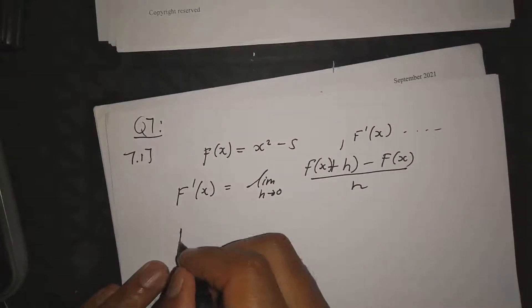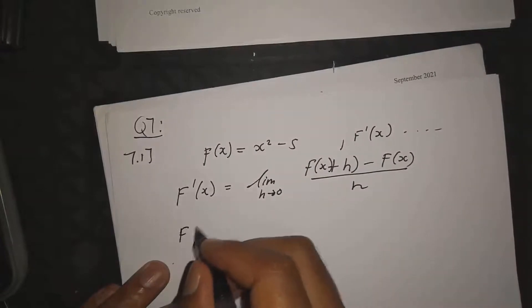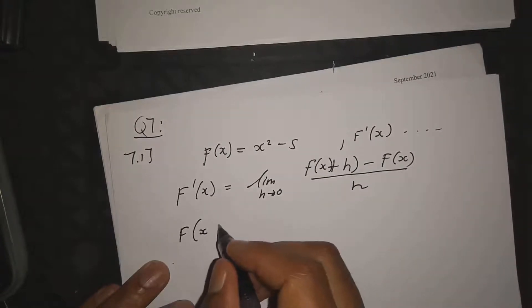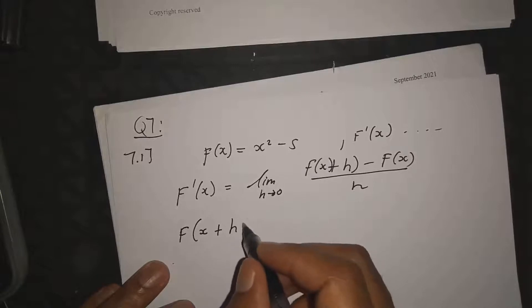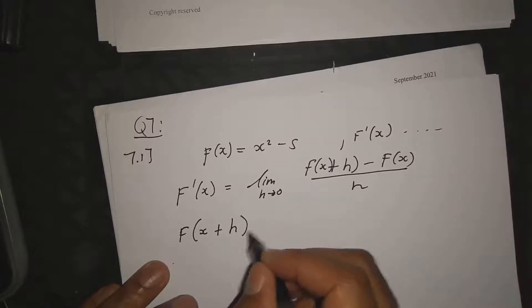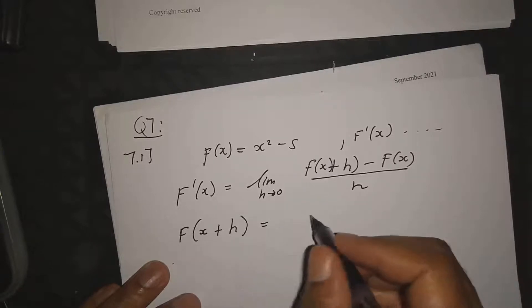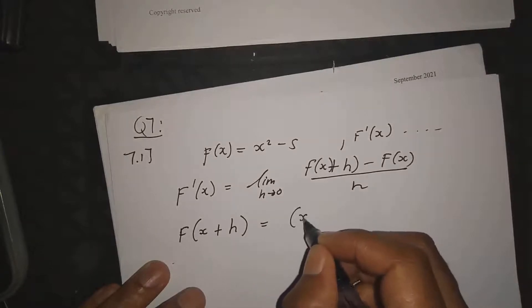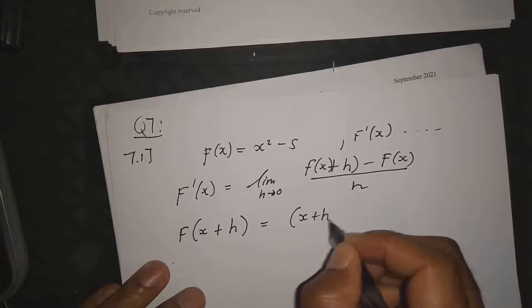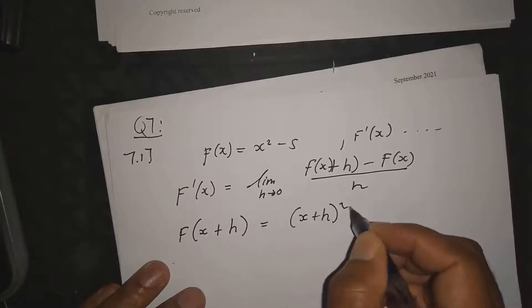Now substitute into the formula. f(x + h) is equal to (x + h)² minus 5.